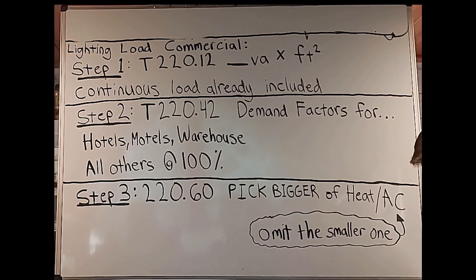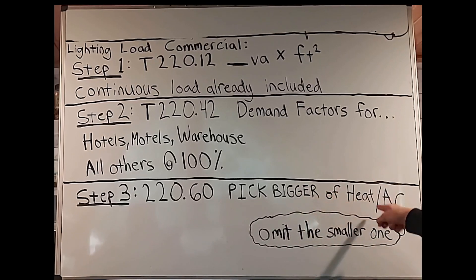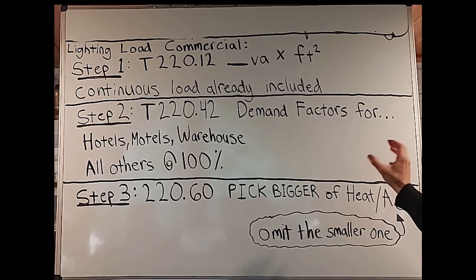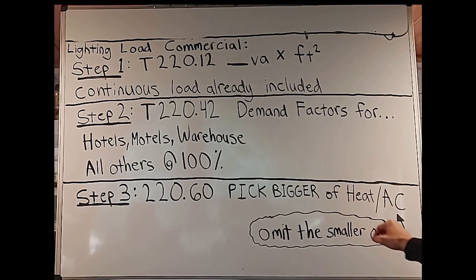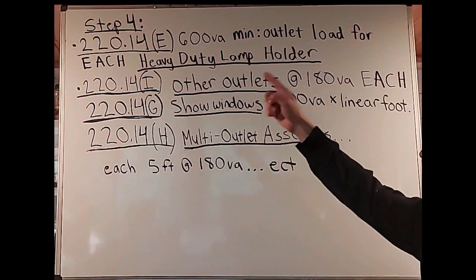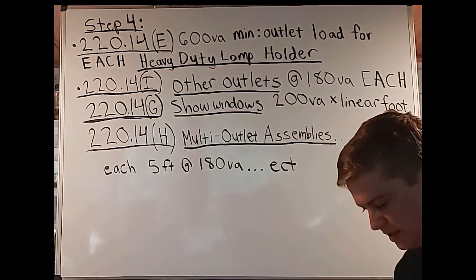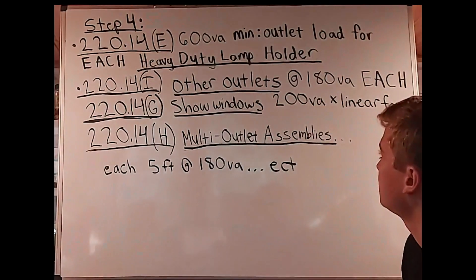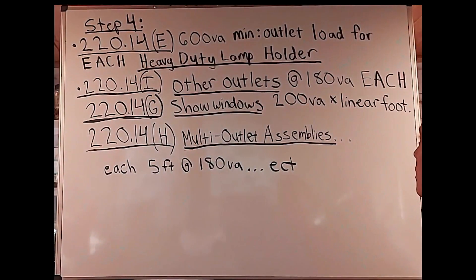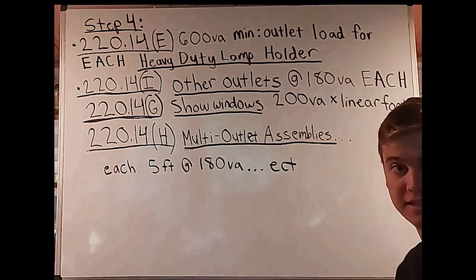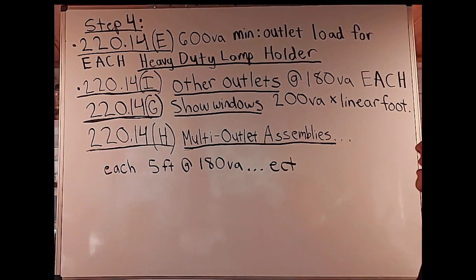Next is step four. We go back to article 220.14, subsection E — heavy-duty lamp holders. It tells us there's a 600 volt amp minimum for the outlet load for each heavy-duty lamp holder. That's the minimum, so if you're told it's more, you use that higher number. Then subsection I covers other outlets. Except for subsections J and K — J being dwelling units and K being office buildings — all other outlets are rated at 180 volt amps each as a minimum.